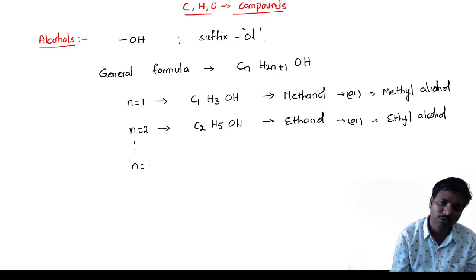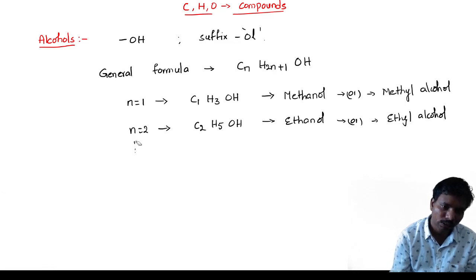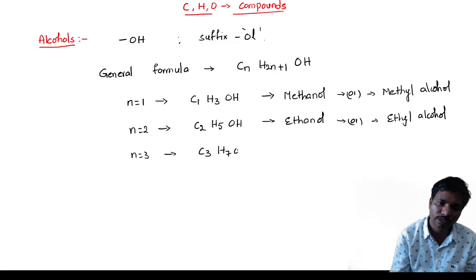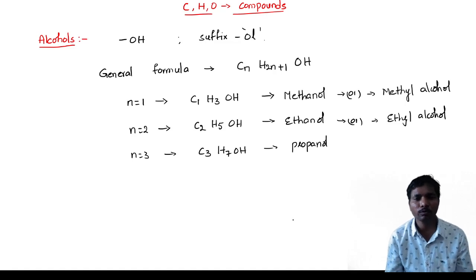In the same way, if the number of carbon atoms is 3, then C₃H₇OH — because 2×3 is 6, plus 1 is 7. So the formula is C₃H₇OH, which gives us propyl alcohol.